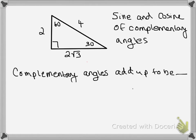The video is about the relationship between the sine and cosine ratios of complementary angles. Let's have a quick refresher: complementary angles are angles that add up to 90 degrees. Earlier in the year, we talked about complementary versus supplementary angles — supplementary angles add up to 180, and complementary angles add up to 90. We're going to look at this relationship in a 30-60-90 triangle.